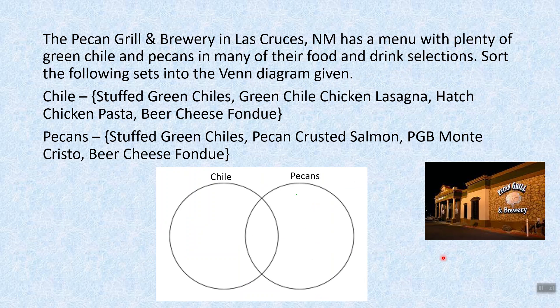The Pecan Grill and Brewery in Las Cruces, New Mexico, has a menu with plenty of green chili and pecans in many of their food and drink selections. Sort the following sets into the Venn Diagram given. I just took a few things off the menu that have green chili: stuffed green chilies, green chili chicken lasagna, hatch chicken pasta, and beer cheese fondue.